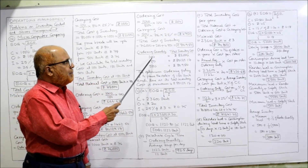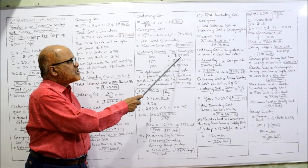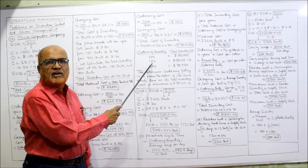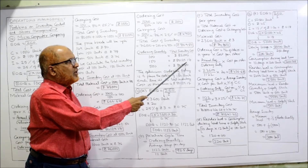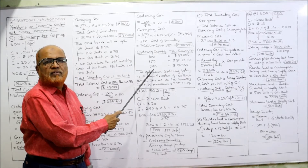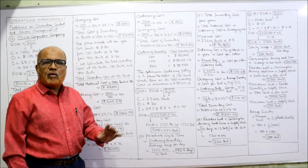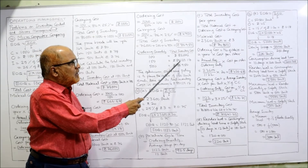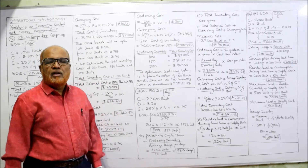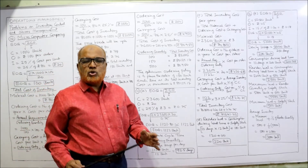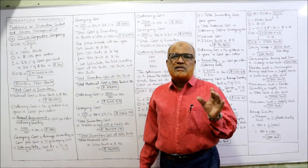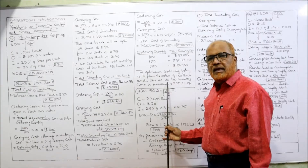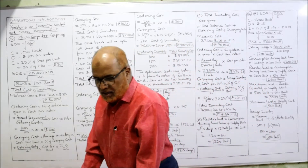Comparing the three: 100 units ordering quantity → total cost 82,000; 150 units → 80,129.17; 500 units → 80,950. The minimum total inventory cost is 80,129.17 at 150 units. Therefore, the company should place the order for 150 units every time. This is the end of problem number 10.